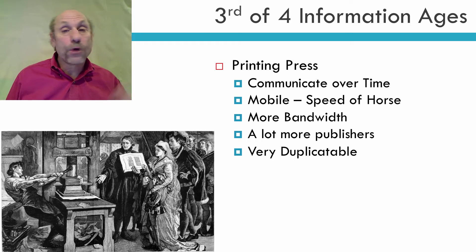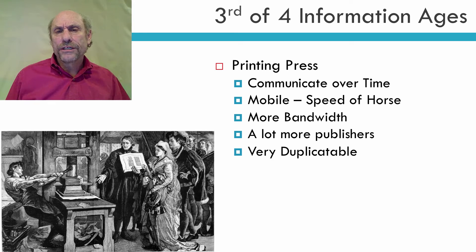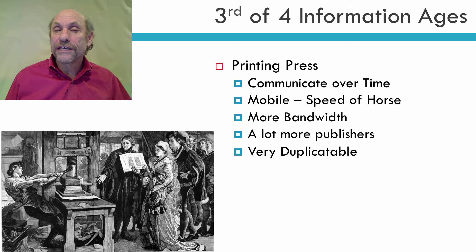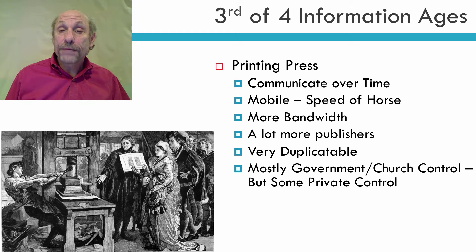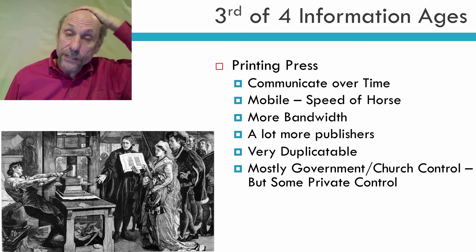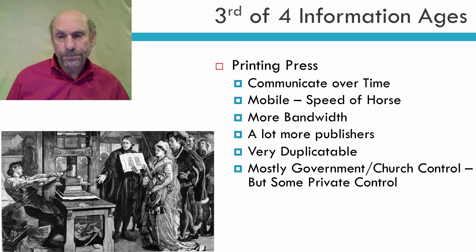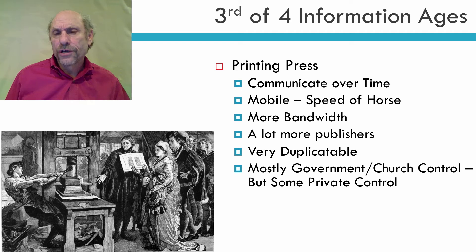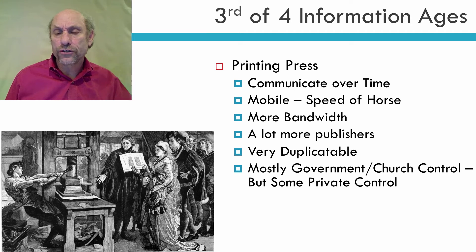Once you have printed a book, you can print multiple copies. That's one of the reasons for the Age of Enlightenment — scientists were able to write and publish their books, and people were able to read the original without worrying about changes in duplication. But printing presses were still mostly government-controlled, with some private control. Frankly, many people say this created the Reformation, as the Catholic Church was losing control of printing presses and people were printing their own Bibles.